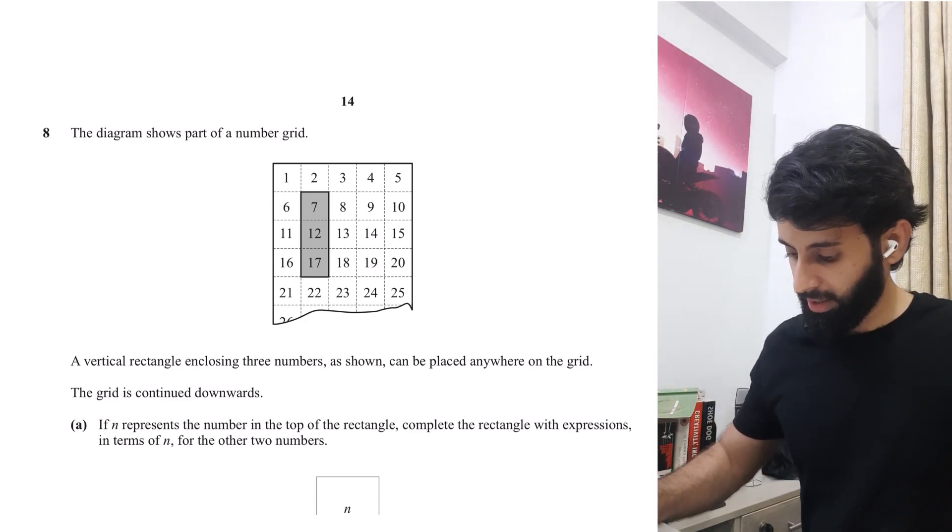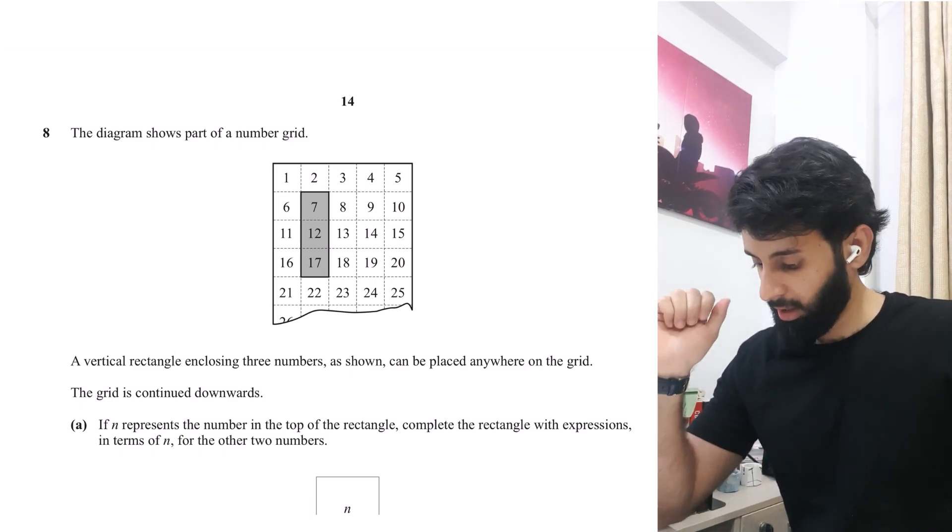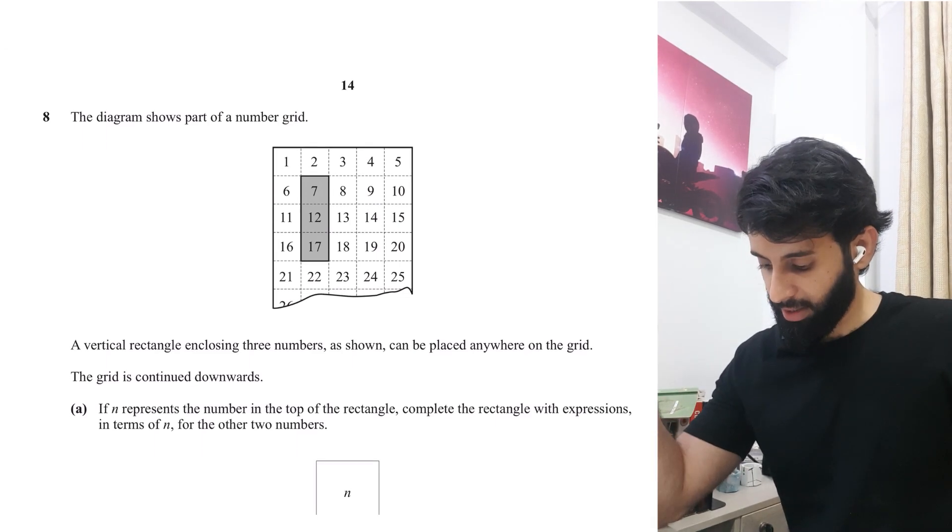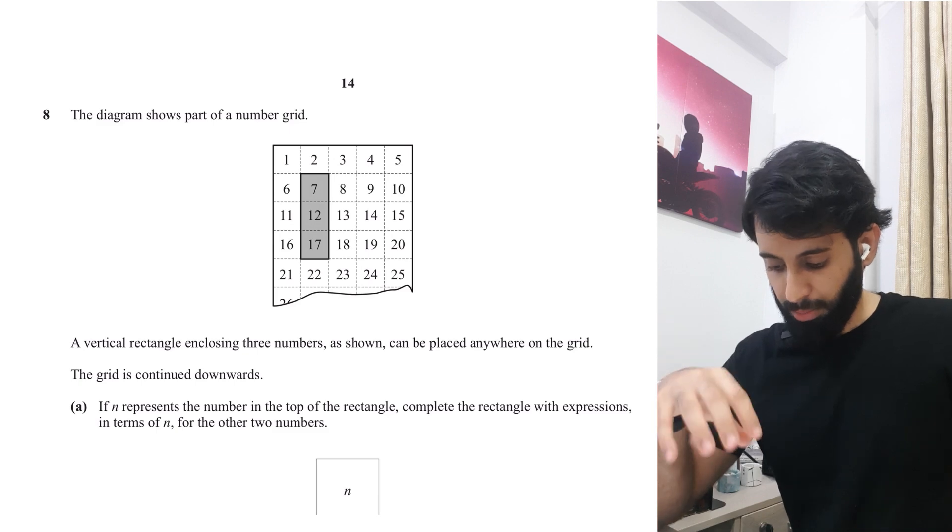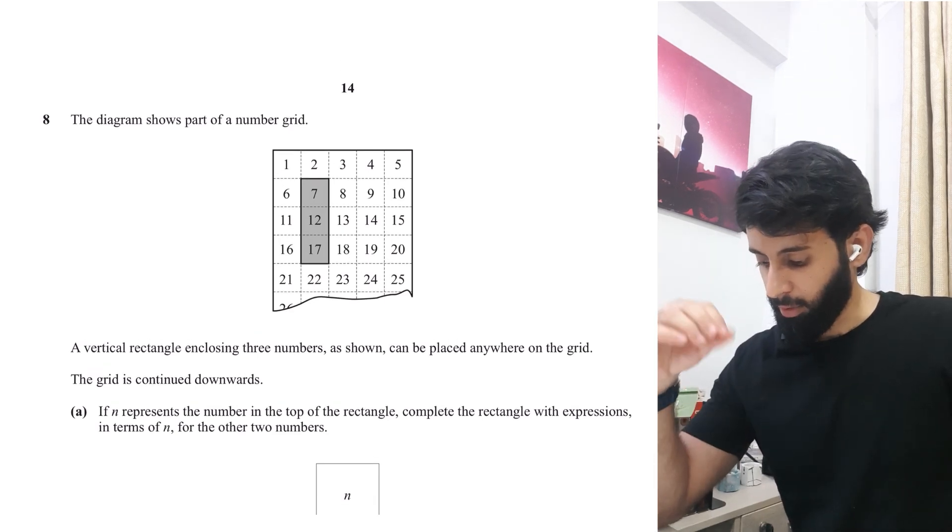A vertical rectangle is enclosing three numbers as shown. Can be placed anywhere on the grid. The grid is continued downwards. If n represents the number in the top of the rectangle, complete the rectangle with expressions in terms of n for the other two numbers now.